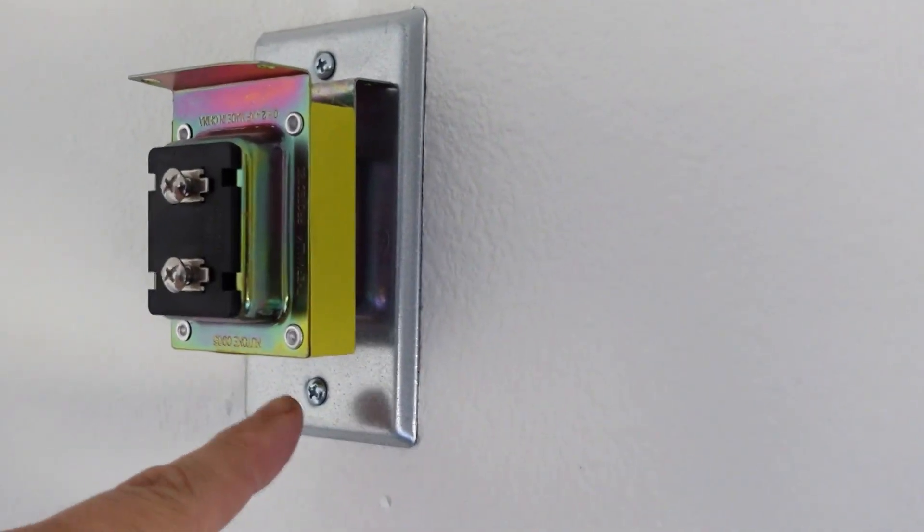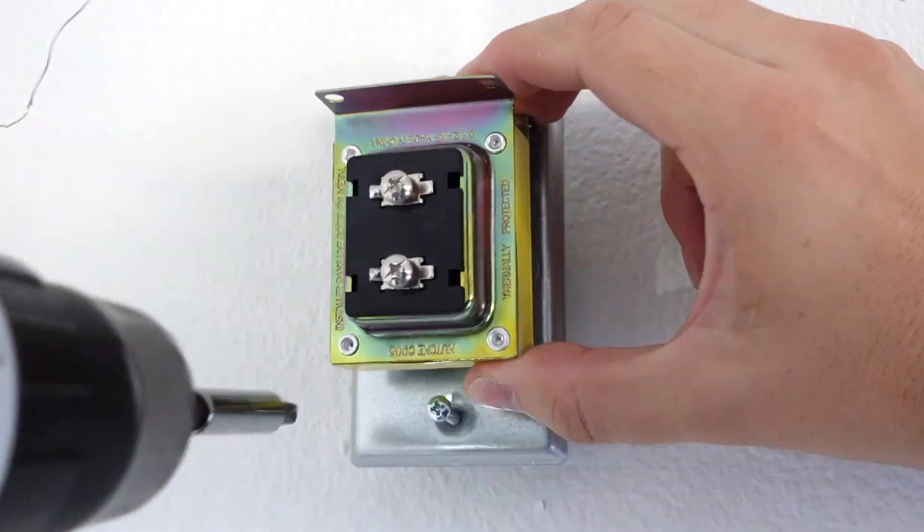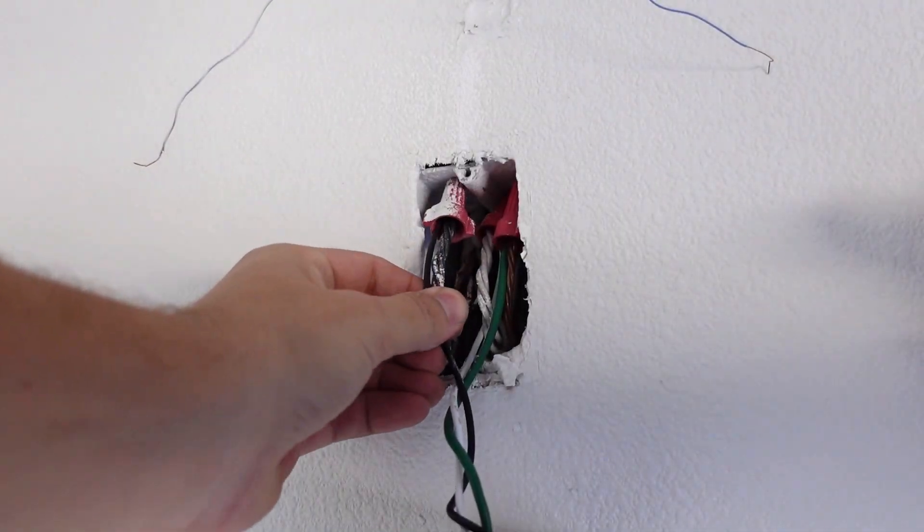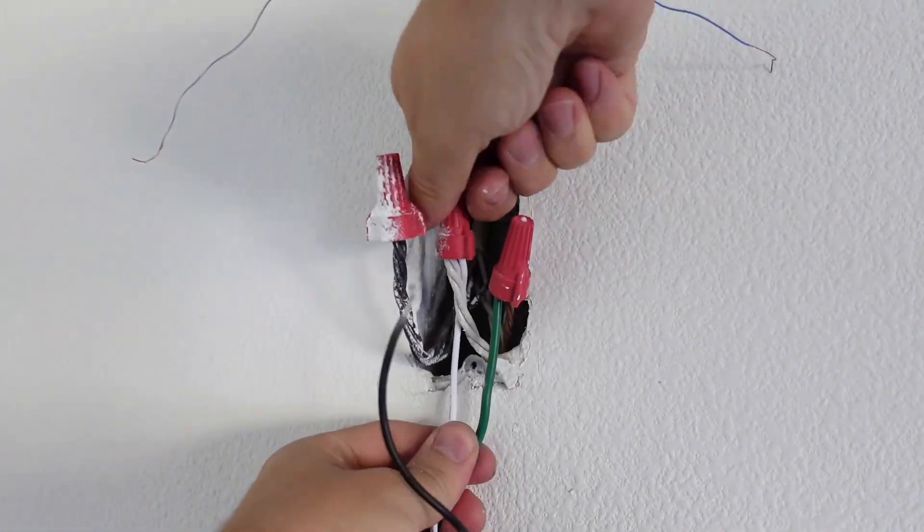Step three, we're going to take off these two screws right here. Pull it out like this, pull out the wires, and remove the wire nuts to disconnect the wires.